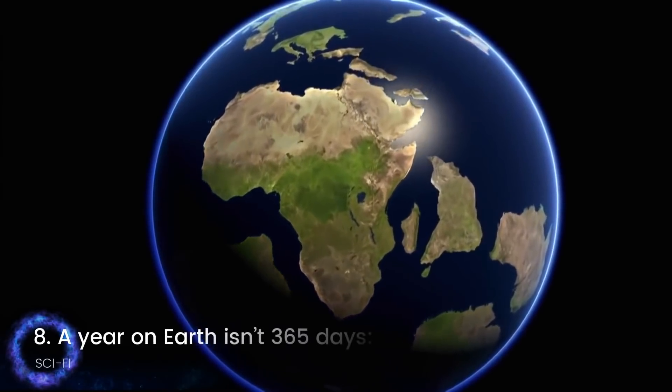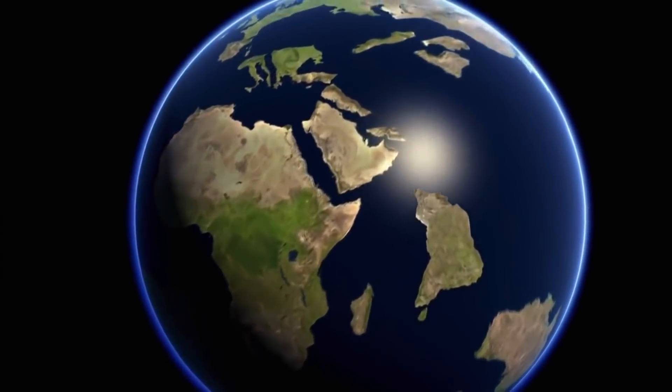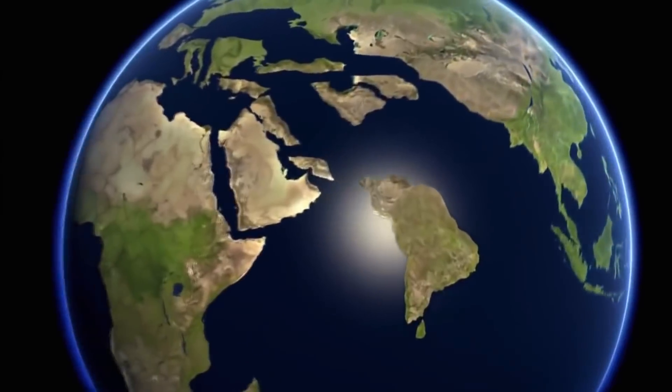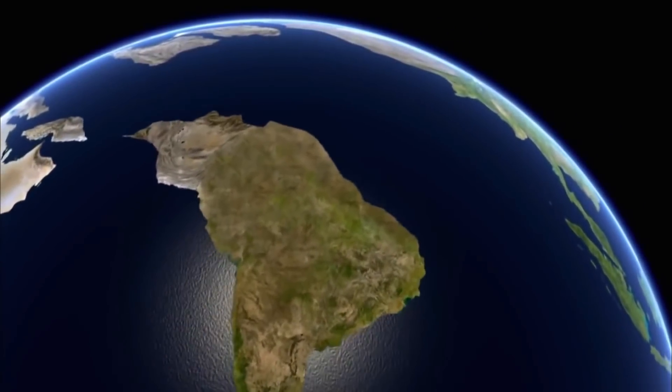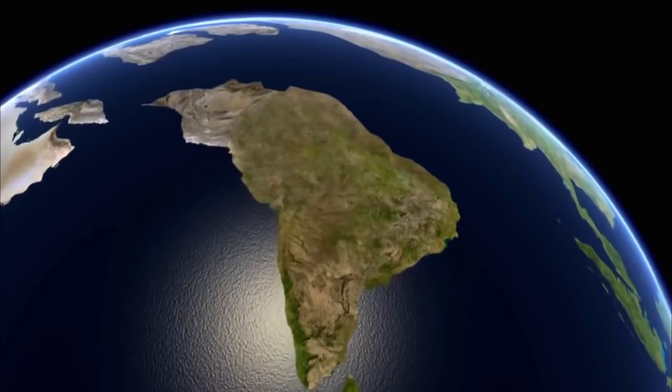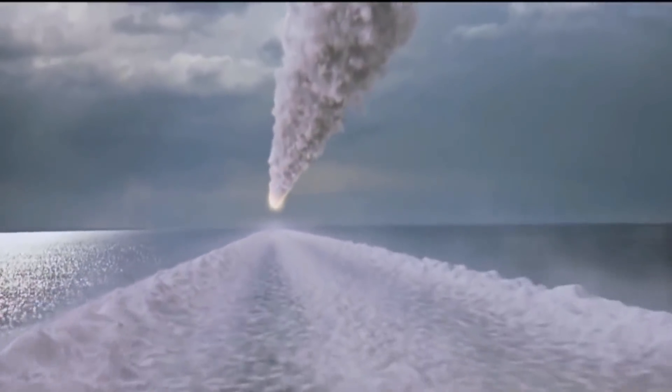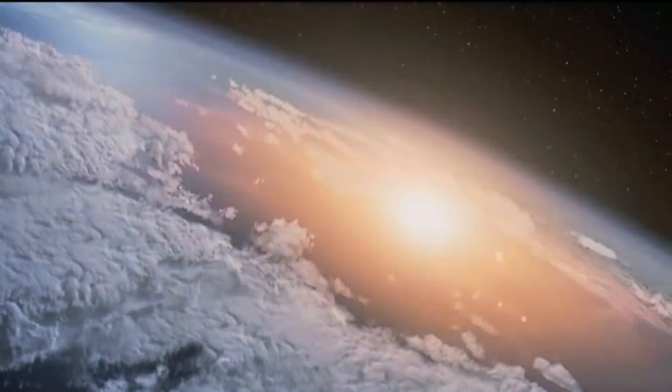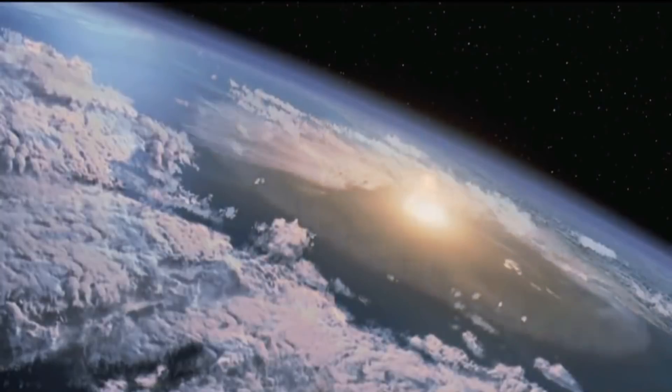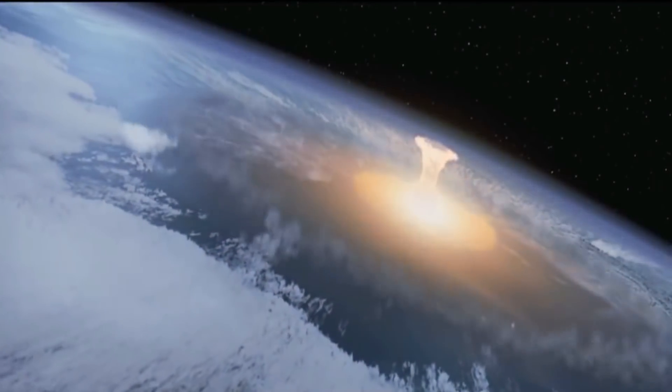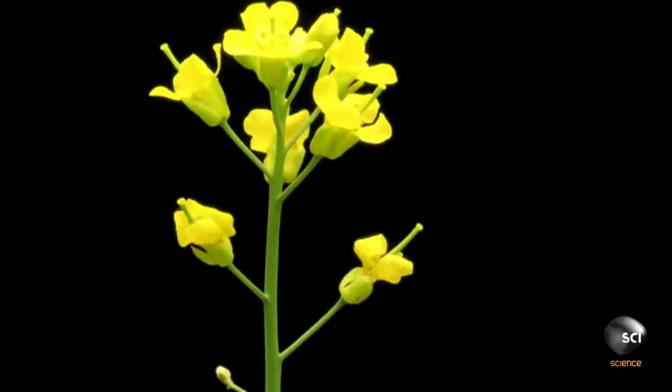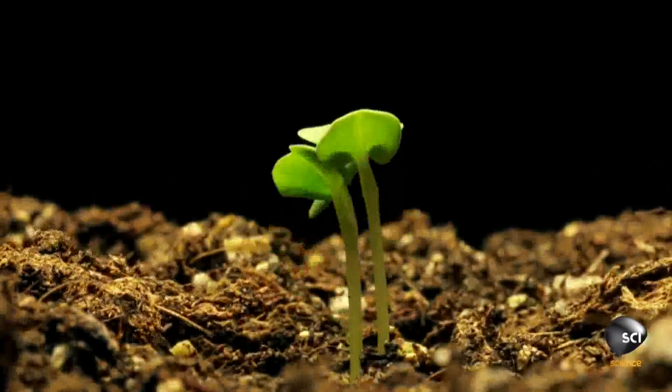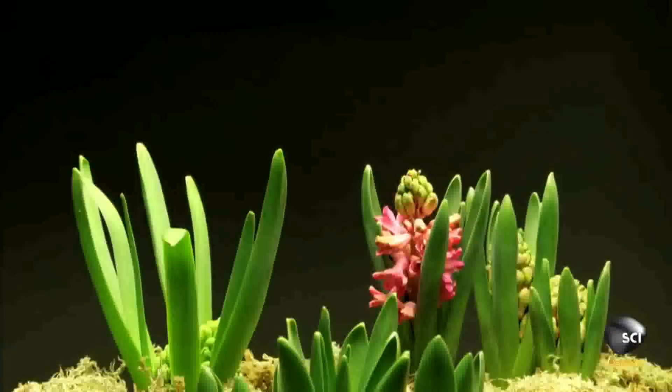A year on Earth is more than 365 days. It's actually 365.2564 days. It's this extra 0.2564 days that creates the need for a leap year once every 4 years. That's why we tack on an extra day in February every 4 years: 2004, 2008, 2012, etc. The exceptions to this rule is if the year in question is divisible by 100, 1900, 2100, etc., unless it's divisible by 400, 1600, 2000, etc.